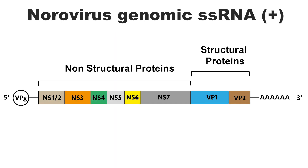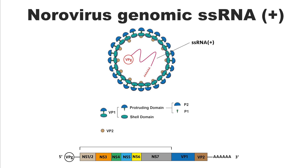In addition to these, noroviruses contain several other non-structural proteins that are crucial for its replication and life cycle. These proteins work together, making the norovirus highly efficient at infecting cells and resisting environmental challenges. Norovirus contains a single-stranded RNA genome. RNA viruses tend to have higher mutation rates compared to DNA viruses, and this high mutation rate contributes to the virus's ability to rapidly evolve and adapt, leading to frequent emergence of new strains.